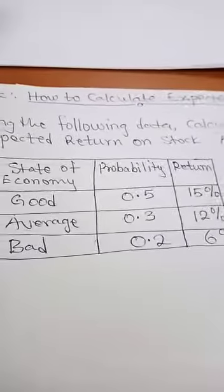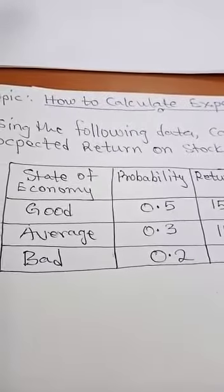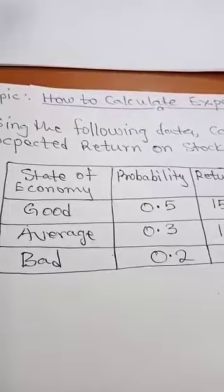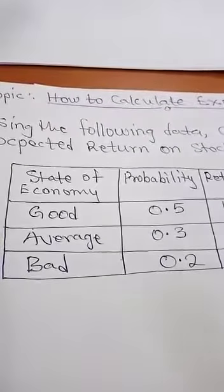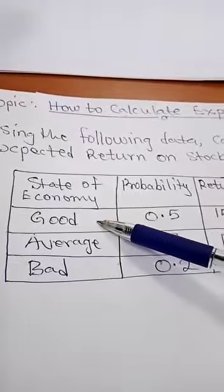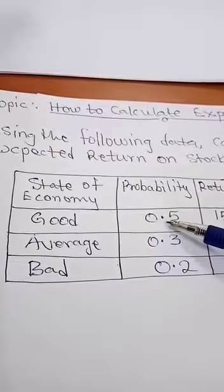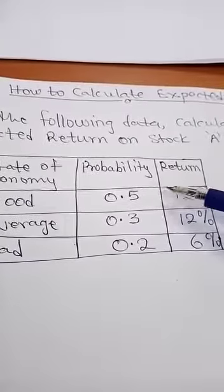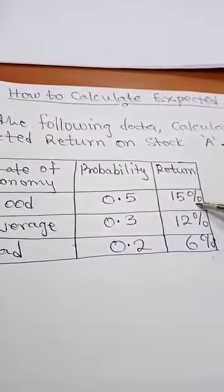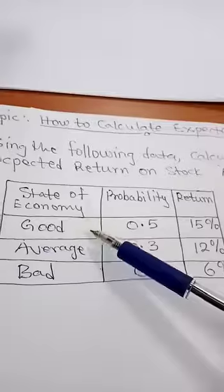Now, this is expected return because the data you are given is three different scenarios. When the economy is good, the probability is 0.5 that the economy will be good and the return is 15%. When the economy is average, the probability is 0.3 and the return is 12%.